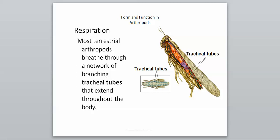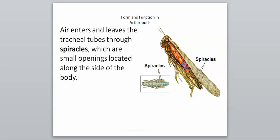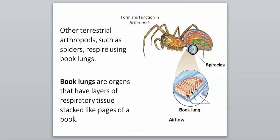For respiration, most terrestrial arthropods breathe through a network of branching tracheal tubes that extend throughout the body. Air enters and leaves the tracheal tubes through what are known as spiracles — small openings located along the sides of the body. So arthropods have small openings on their sides that allow air to pass through the tracheal tubes. They don't really take a deep breath like we do; they just let air pass through holes in their sides.